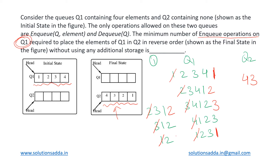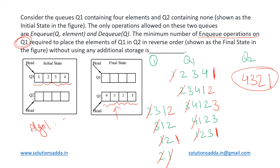We dequeue 1 and enqueue it back into Q1 — the sixth NQ operation — giving us 2 and 1. In the next two steps, we dequeue 2 and enqueue it into Q2, then dequeue 1 and enqueue it into Q2, so we get the result. With Algorithm 1, we required six NQ operations on Q1.